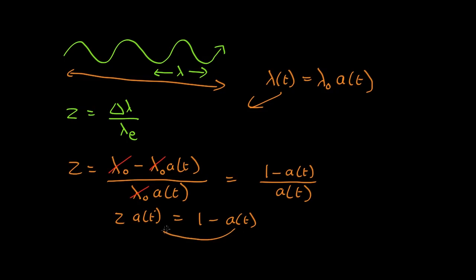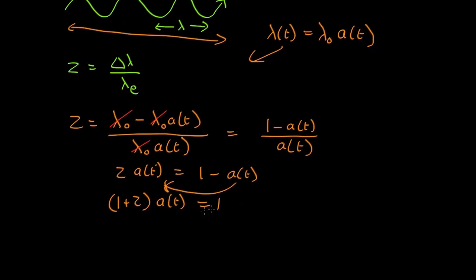Move this across here. So you get (1 plus z) times a(t) equals 1. So a(t) equals 1 over (1 plus z), or 1/(1+z).